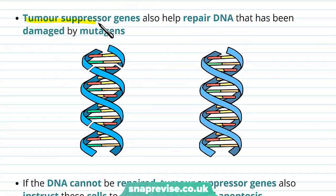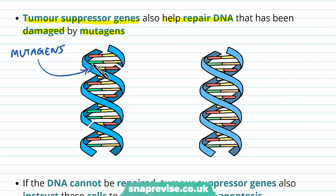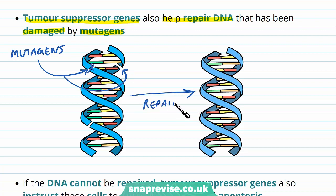The tumour suppressor genes also help to repair DNA which has gone through some damage caused by mutagens. Mutagens are chemicals which can cause mutations to DNA, and a mutation is a change to the base sequence. So mutagens can cause damage, and the repair can be carried out by the products of these tumour suppressor genes.